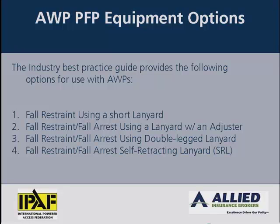To address proper selection of personal fall protection, the best practice document provides several options for personal fall protection when using an aerial work platform. All of the options include restraint. Restraint is required when entering a platform from ground level, as zero fall would be allowed. It is only when reaching higher elevations — where the calculated fall distance can be achieved without hitting a lower surface — that a fall arrest system can be used.